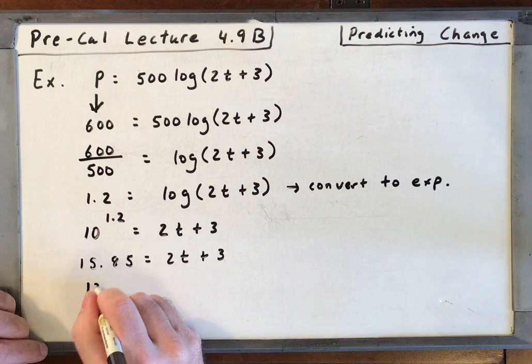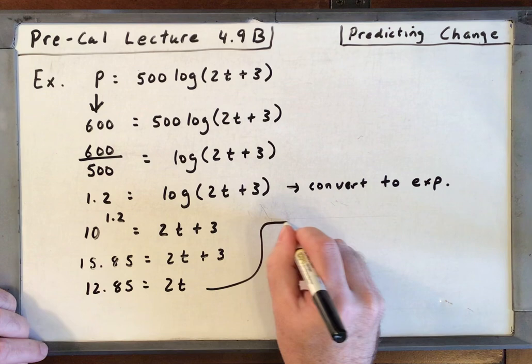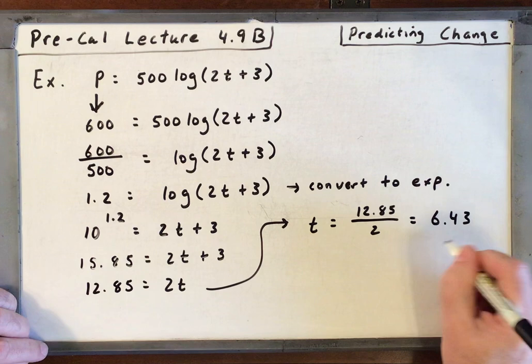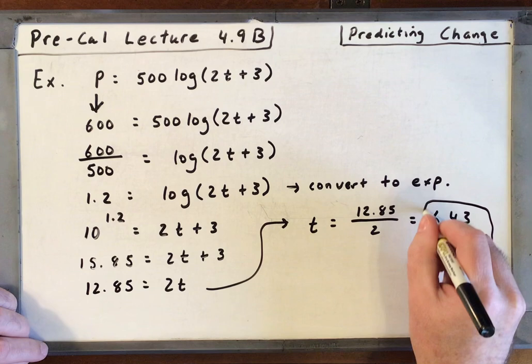Well, now this is just linear algebra. We'll subtract 3 from both sides. 12.85 is equal to 2t. So the time in months is going to be 12.85 over 2. That is 6.43 months.